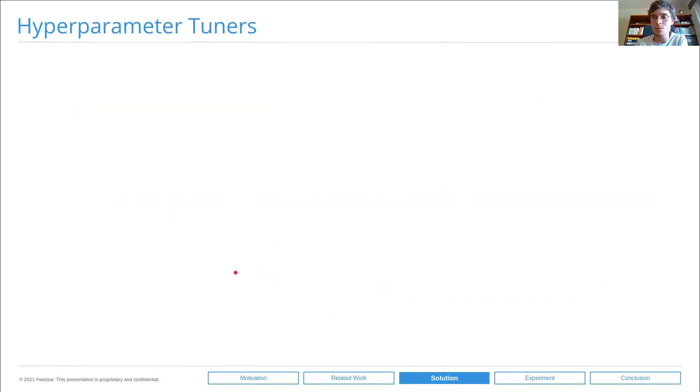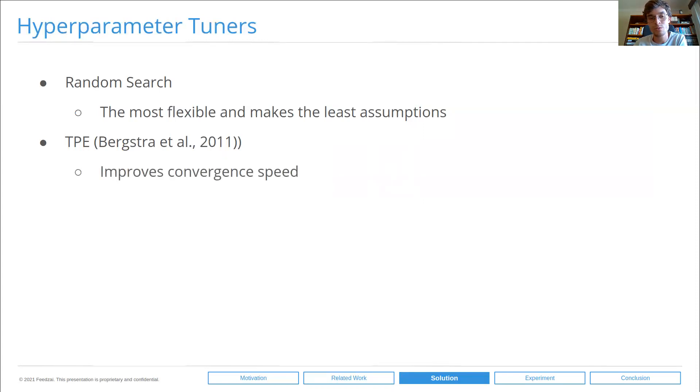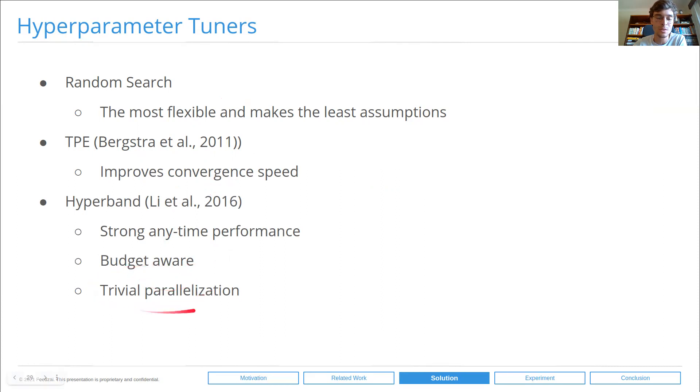We will apply this methodology to three popular hyperparameter tuners. First of all, we'll apply it to random search, which is the most flexible tuner and makes least assumptions and one of the most widely used. We'll also apply it to the Tree-Parzen Estimator, which is a Bayesian optimization tuner put forth by Bergstra et al., which essentially improves convergence speed when compared to random search. And we'll also apply it to Hyperband, which is a bandit-based algorithm put forth by Li et al. that shows strong anytime performance, is budget-aware, and importantly can be trivially parallelized, is not executed in a sequential manner.